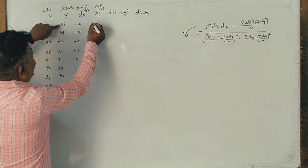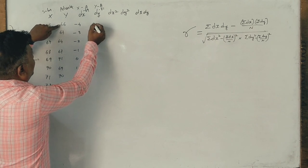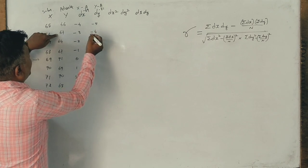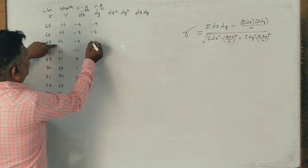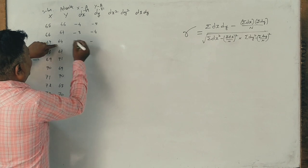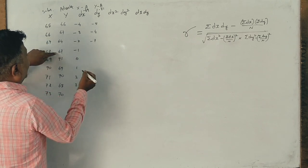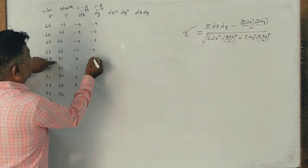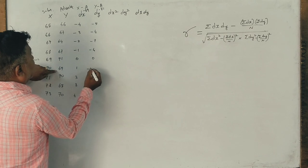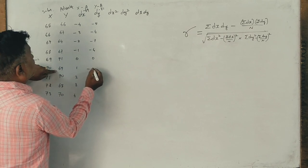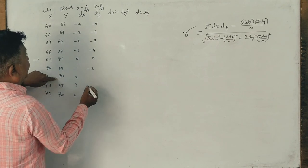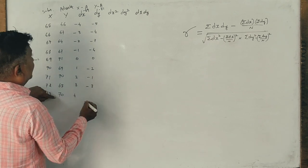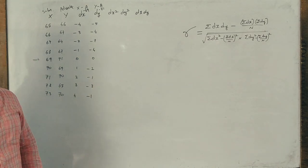66 minus 71 is minus 5. It is minus 4. 71 minus 14 is 7. 67 is minus 4 is 0. It is minus 3 is 2. It is minus 1, it is minus 3, it is minus 1. This is dy.